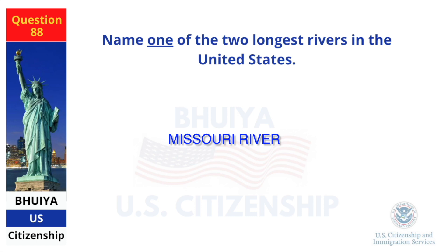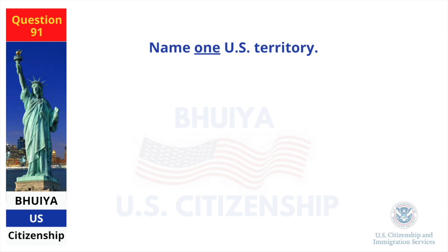Name one of the two longest rivers in the United States. Missouri River. Name one US territory. Guam.